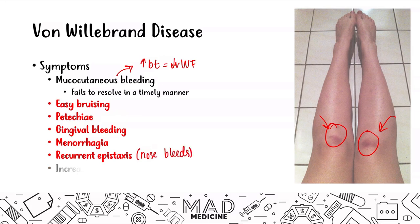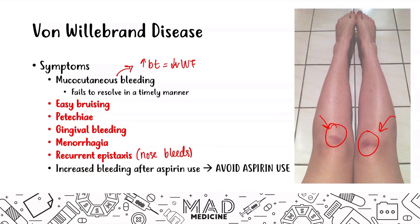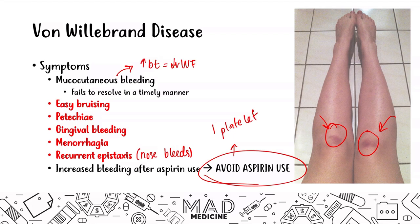You will also see increased bleeding after aspirin use, so you want to avoid aspirin. Aspirin prevents platelet aggregation — that's why low-dose aspirin is given to patients at high risk of cardiovascular disease. In von Willebrand disease, you already have decreased platelet adhesion, so giving aspirin would further decrease platelet aggregation effects, which you do not want. Therefore, avoid aspirin use in patients with von Willebrand disease.